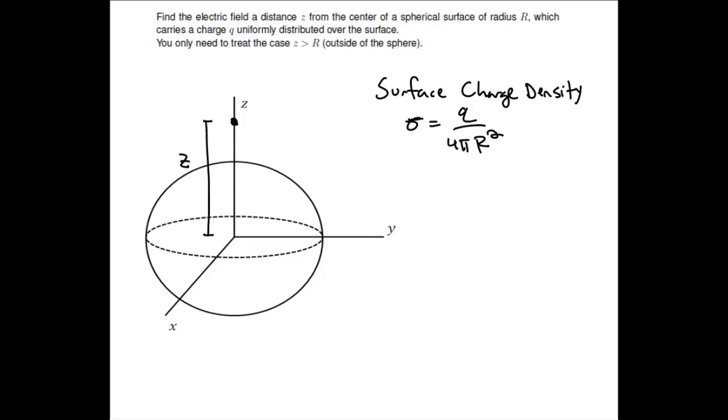Now in order to find the electric field at point z, what we really need to do is find the electric field due to some small piece of charge, and then add up the electric field due to all those little pieces of charge. So a small piece of charge will have some charge dq, which will be sigma times the small amount of area.